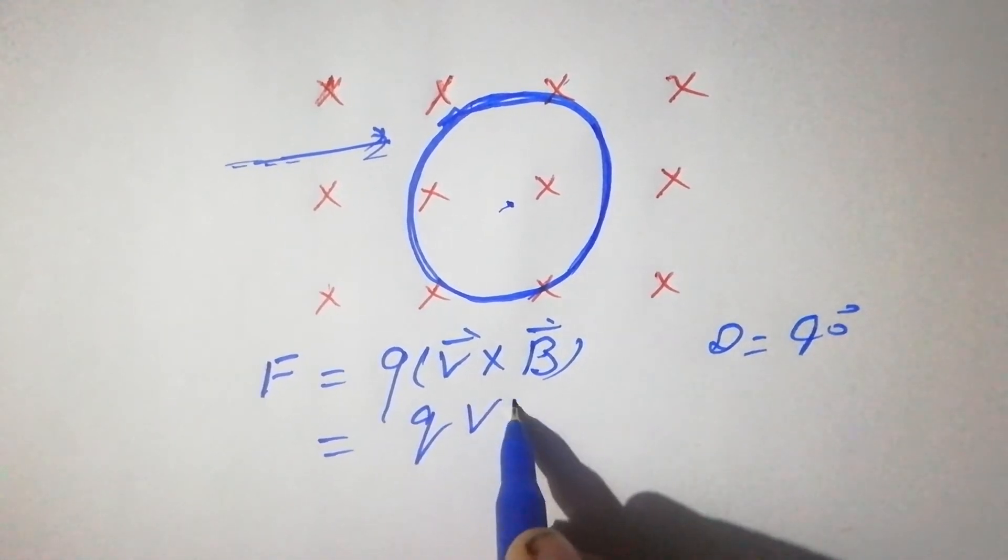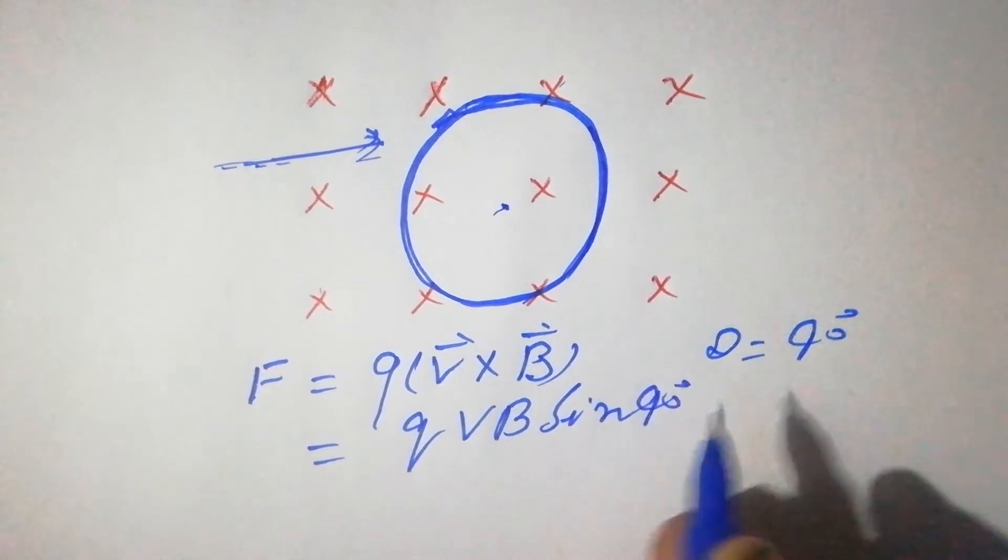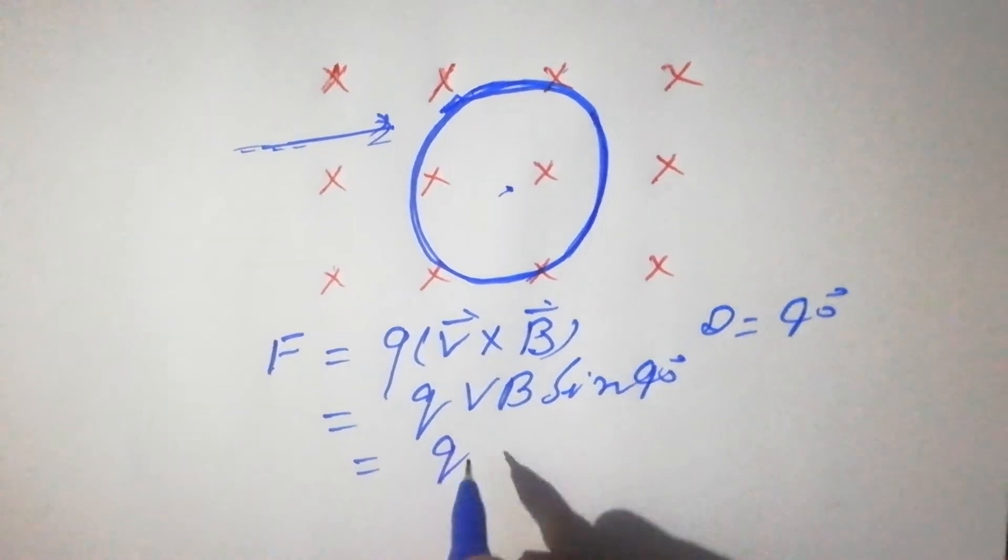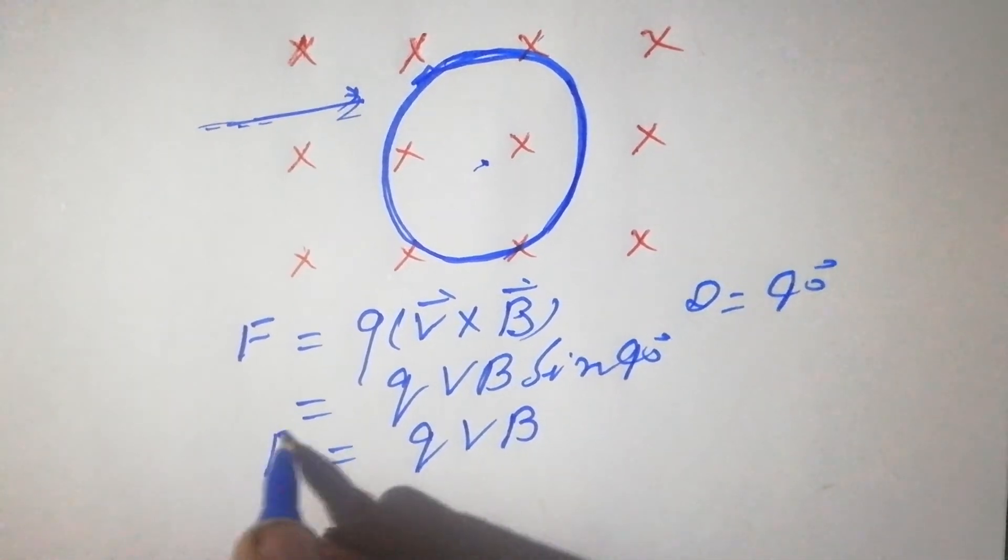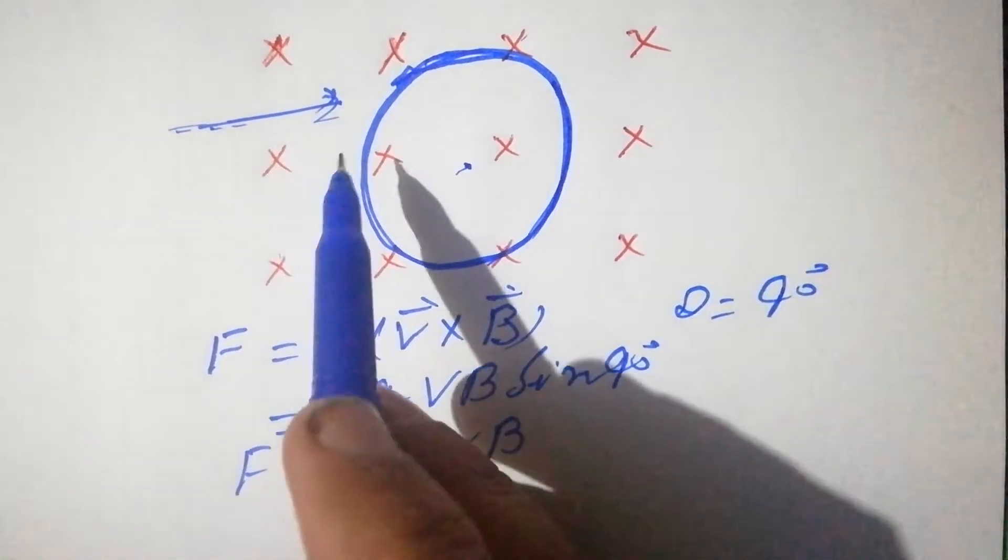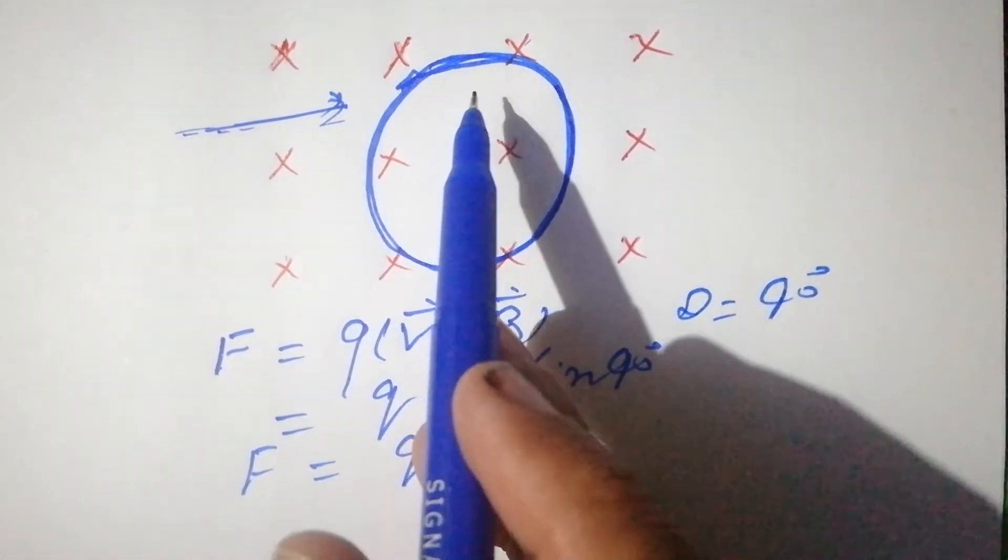This equals qVB sin 90°, and sin 90° equals 1, giving F = qVB. This is the magnetic force acting on the charged particle entering the magnetic field region.